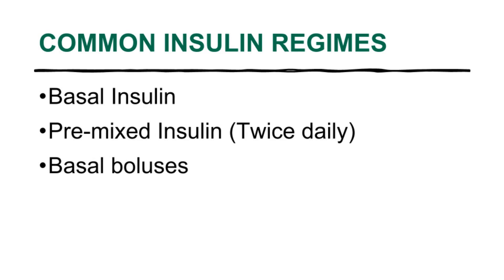How do we start insulin? Insulin regimes should be individualized; however, there are several common regimes practiced. Insulin therapy may be initiated as augmentation using basal insulin combined with oral hypoglycemic agents, or as replacement — either a premixed twice-daily regime or a basal bolus 4 to 5 times daily regime.